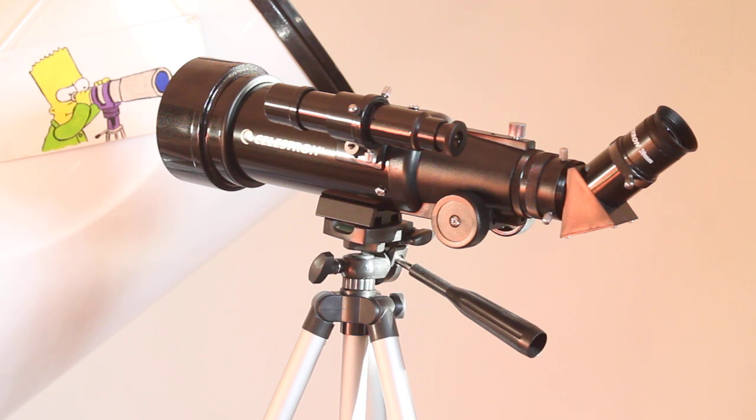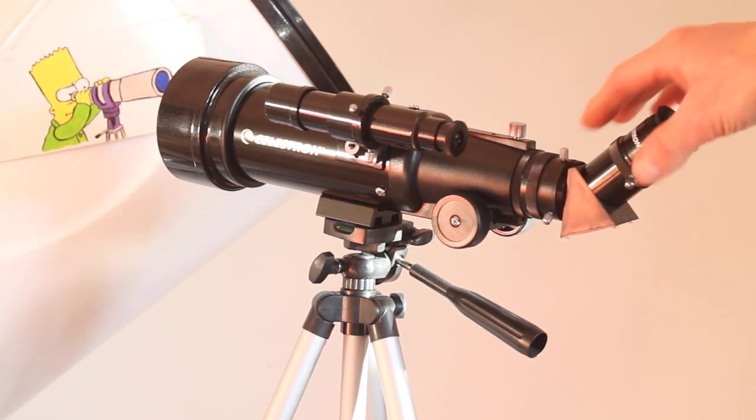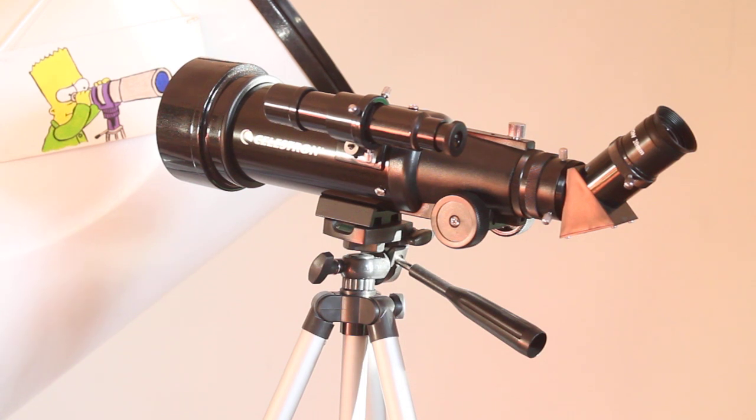So let's go into the eyepieces. You get a 10mm and a 20mm - these are modified achromatics and they give 20x and 40x. And again, this is a wide field telescope. Don't worry about high magnification. There are other telescopes available if that's what you want, if you want to look at planets. But for finding your way around the night sky...